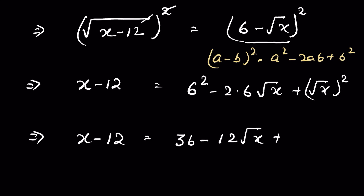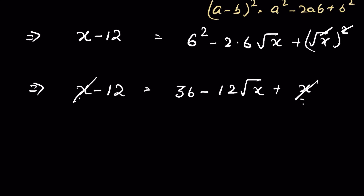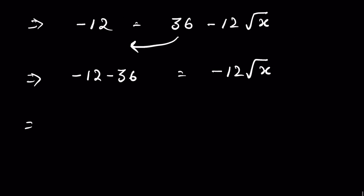We remove the square root with the square, giving plus x on the right. The x and x terms on both sides cancel. Bringing terms together: minus 12 equals 36 minus 12 times square root of x. Moving 36 to the left side: minus 12 minus 36 equals minus 12 times square root of x, giving minus 48 equals minus 12 times square root of x.